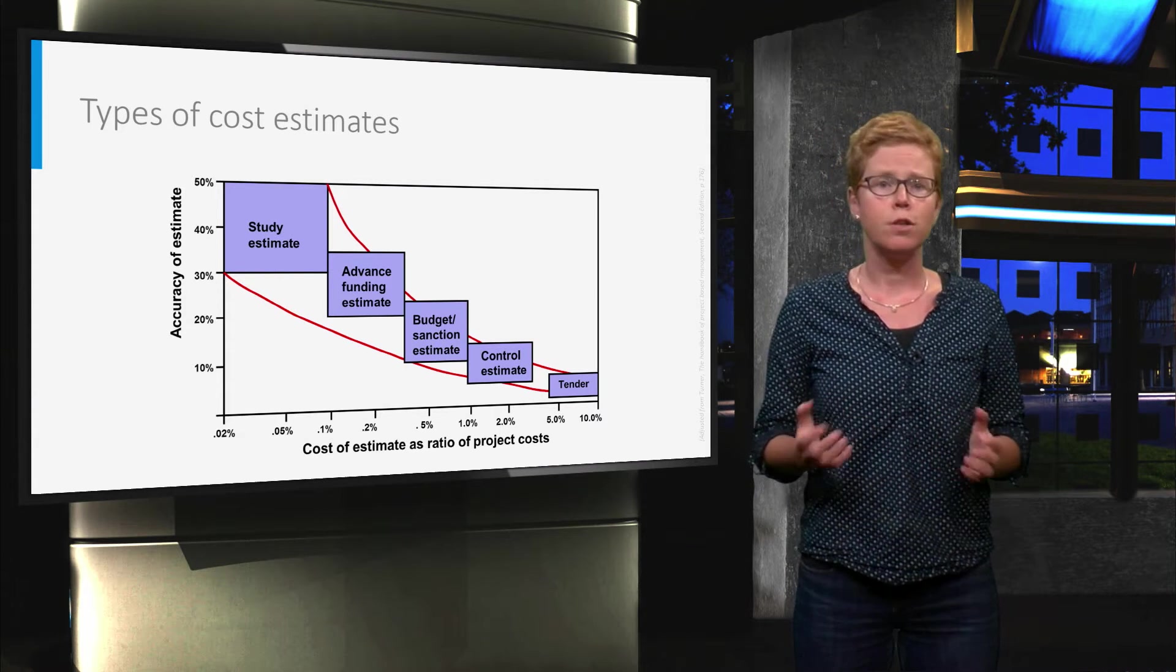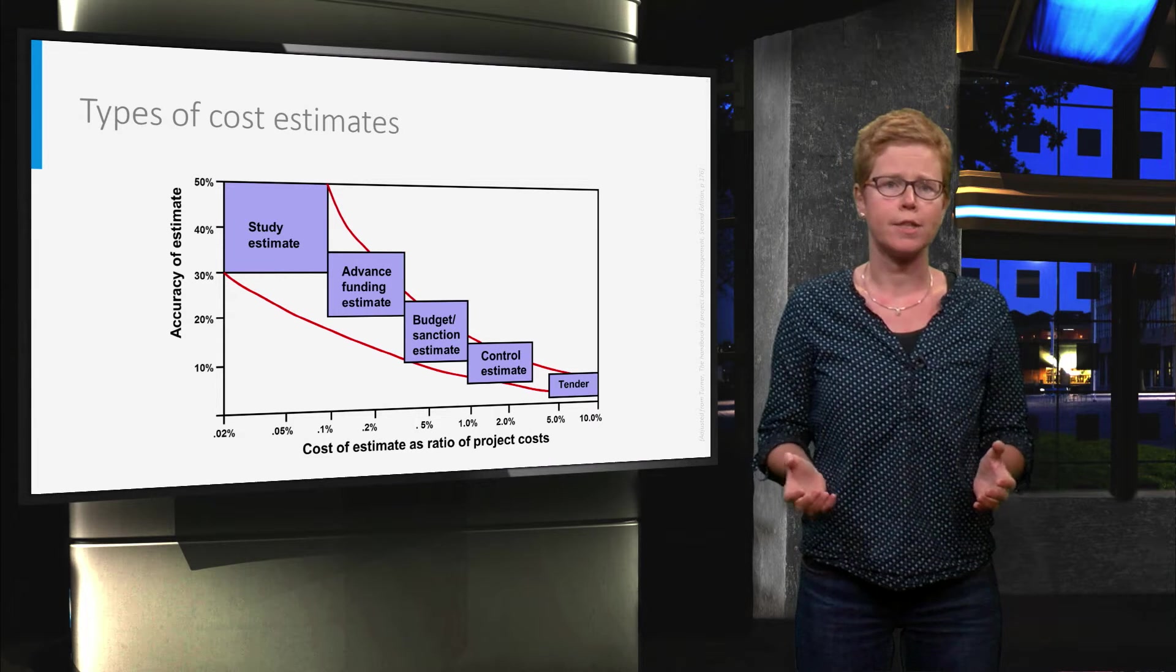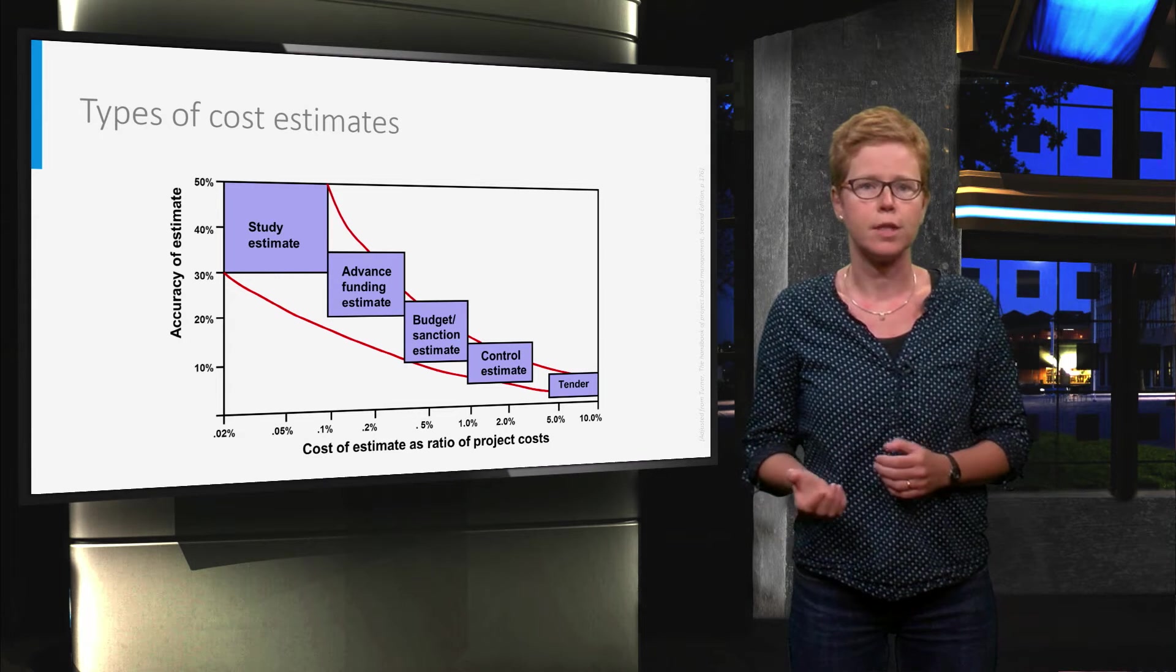For an advanced funding estimate, for example system design, you will look at the work package level, and the accuracy is roughly between 20 and 35 percent.